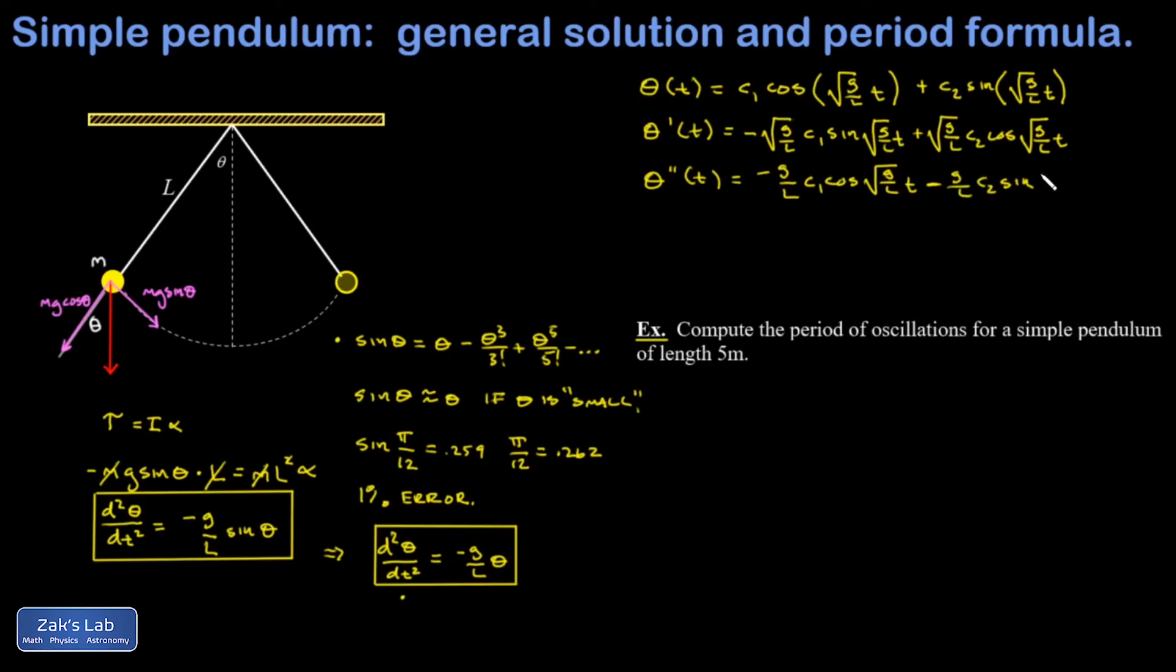So I have negative g over L C1 cosine root g over L t minus g over L C2 sine root g over L t. And then I'm trying to find my original function in that. And if I factor out the negative g over L, I do find it, and if I express it as the original theta of t, that proves that this thing obeys the differential equation I was trying to solve. So it is a solution.